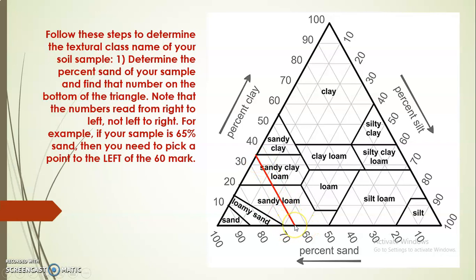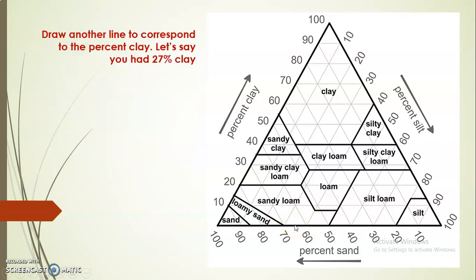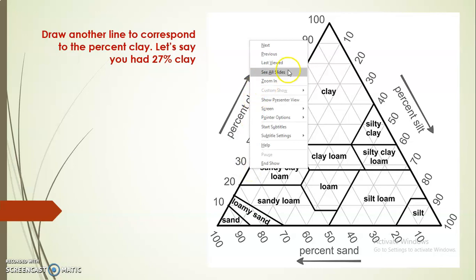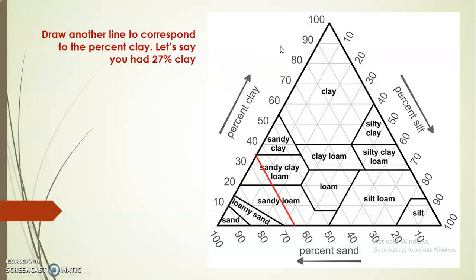The next step is to draw a line corresponding to clay being 27%. Pause it if you want to try it yourself. Starting at 0, 10, 20, 30 — 27% ought to be right here. So we draw that clay line.